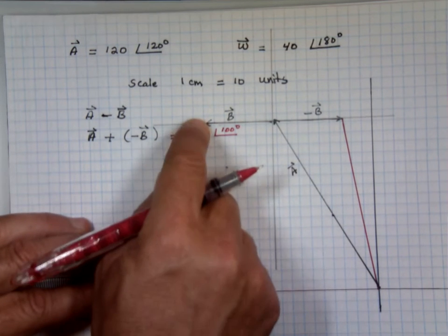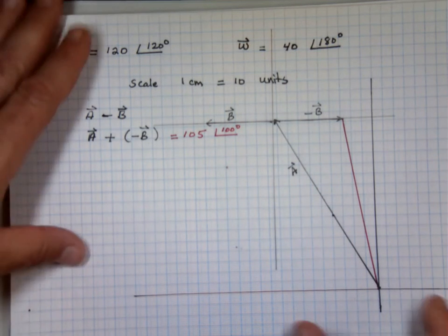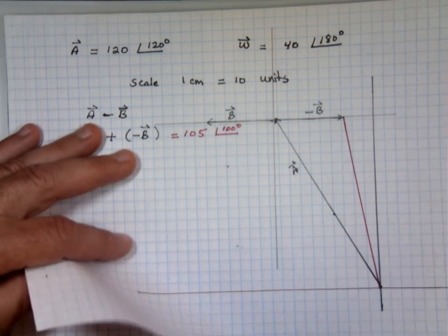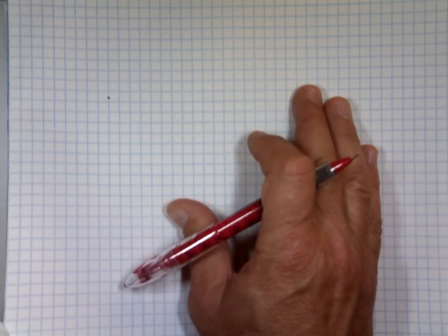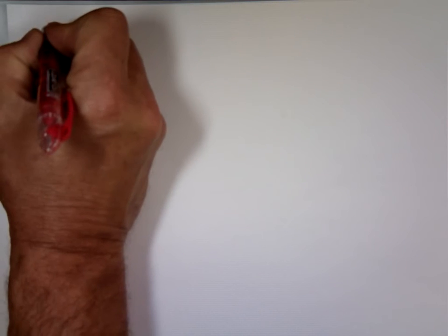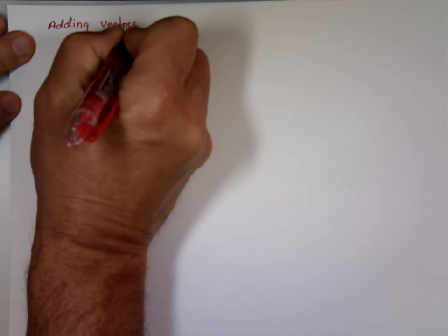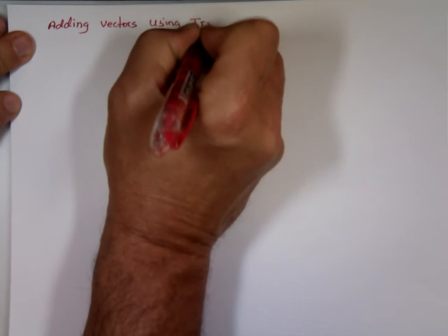So they have to figure things out — point the plane in the right direction and let the wind push them where they need to go. Now let's see how we do them mathematically. I'm going to write the steps for adding vectors using trig — trigonometric.